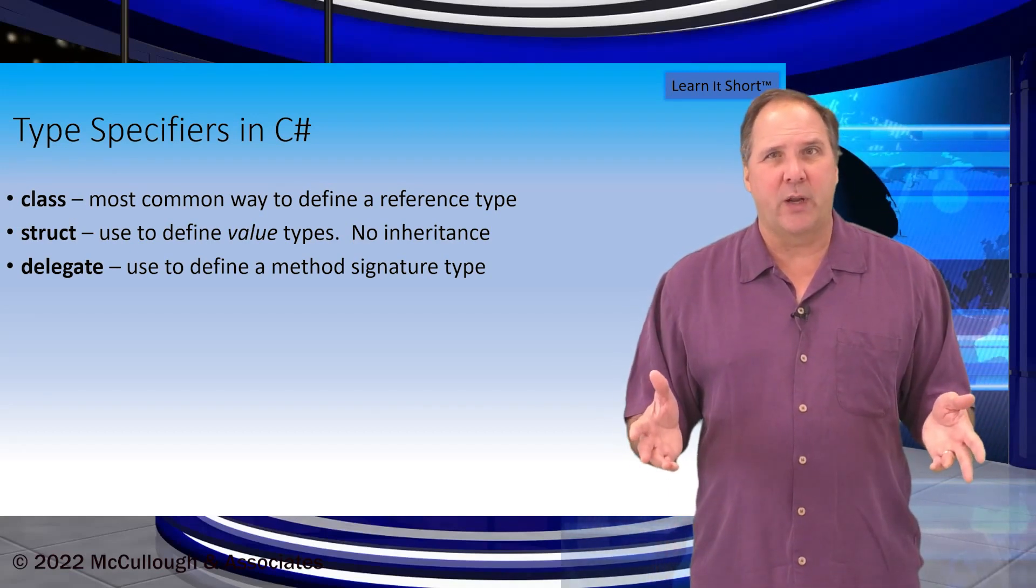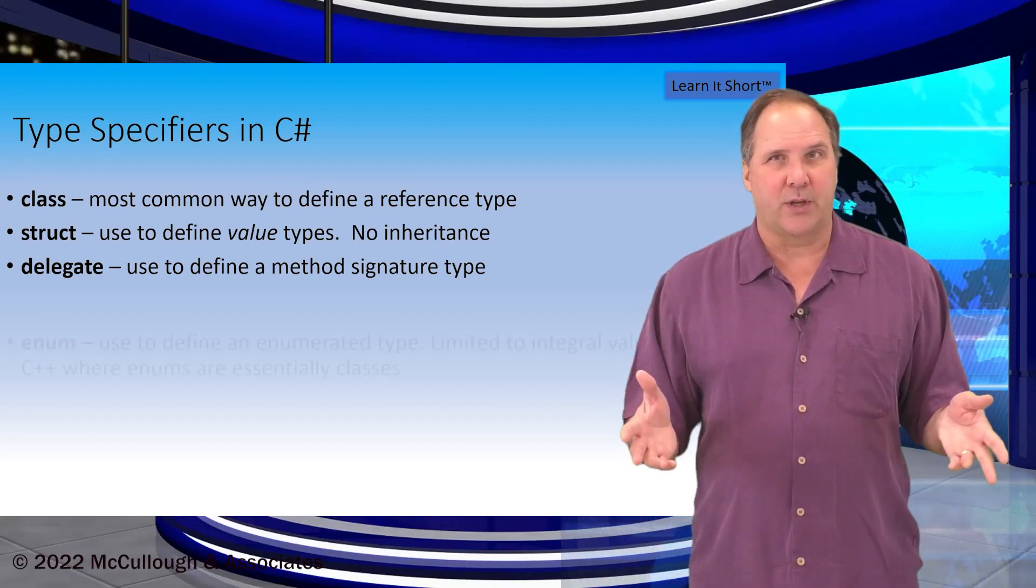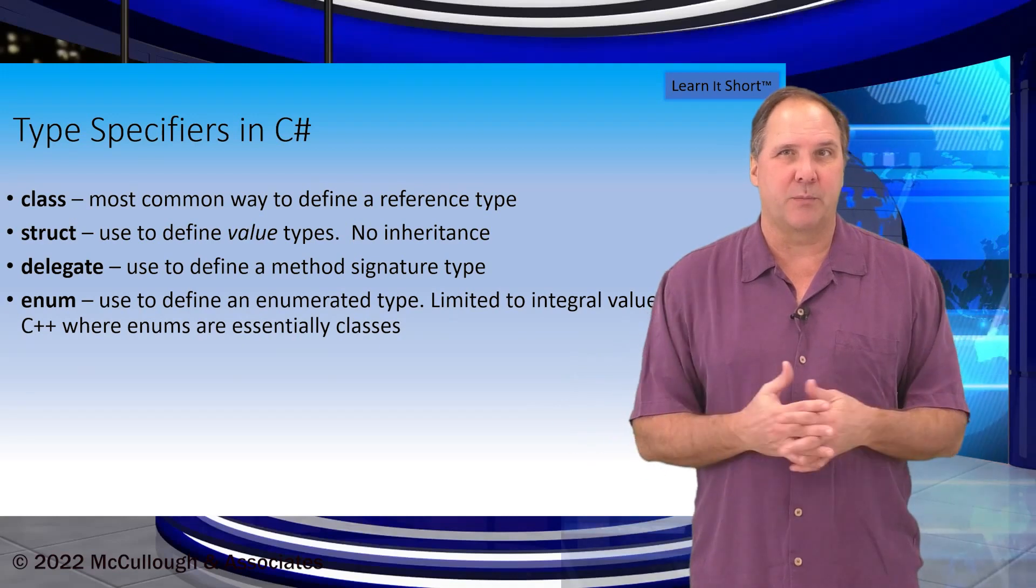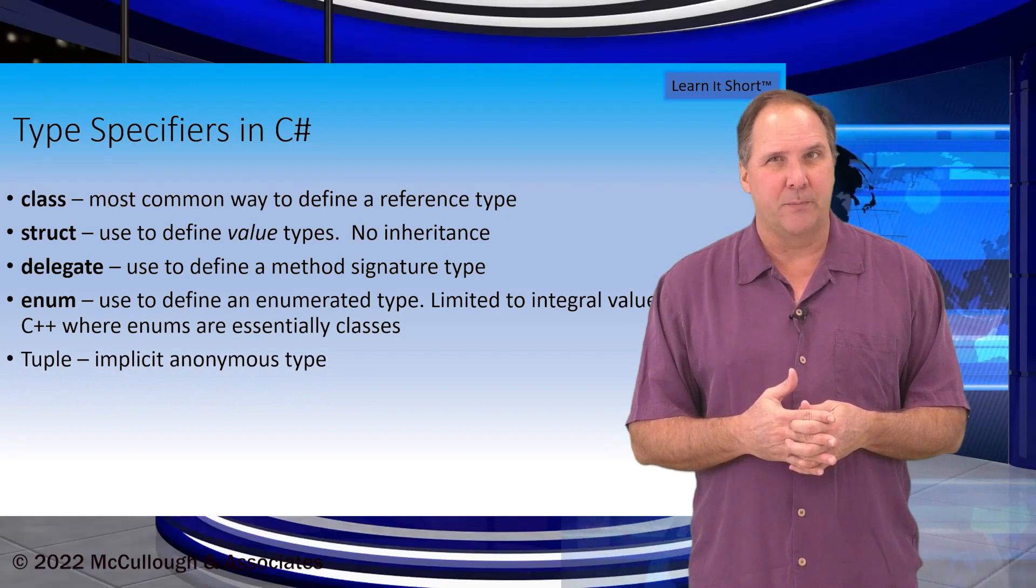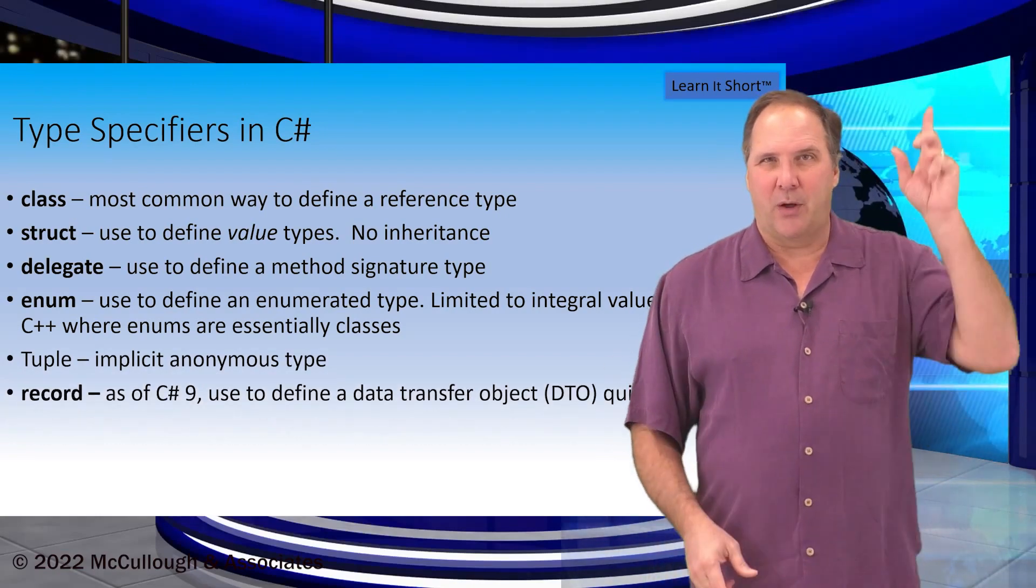C-sharp also supports enumerated types at least integral types a little different again from C++ and of course we can define anonymous types with tuple and you can check out my video on that.